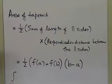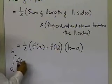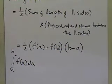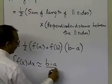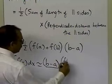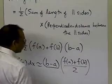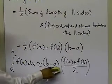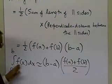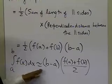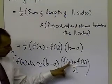So the trapezoidal rule formula is: the integral of f of x from a to b is approximately equal to (b minus a) times (f(a) plus f(b)) divided by two. This is the approximate formula for the trapezoidal rule — it's b minus a, which is the width of the interval, times the average value of the function at a and b.